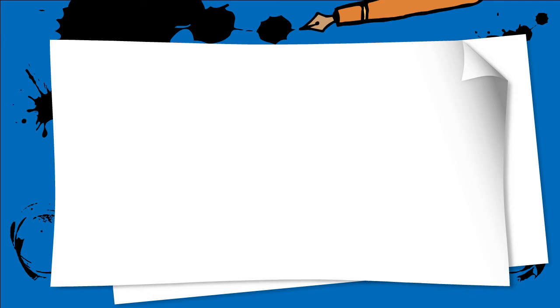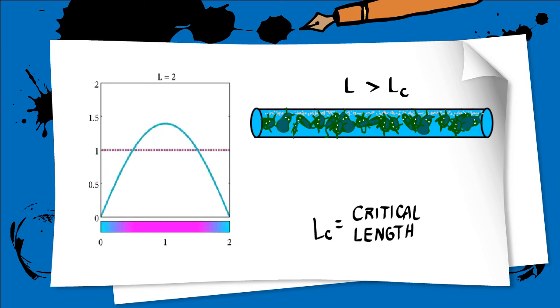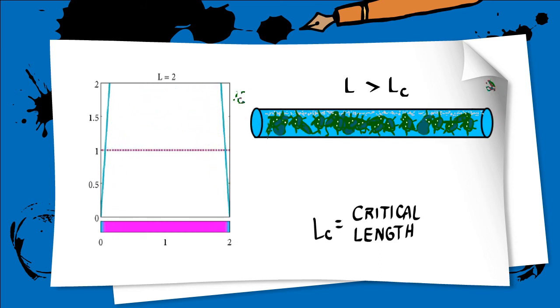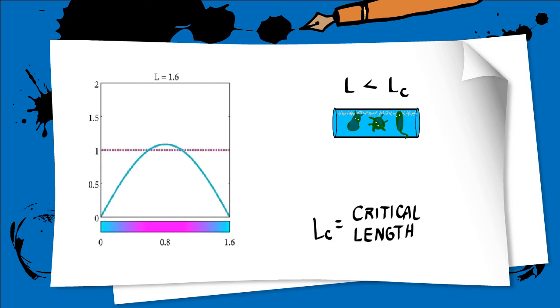Above a critical length Lc, the population of plankton will thrive and increase. If the length of the tube is less than Lc, the plankton will diffuse out of the good waters faster than they can reproduce, so the population will die out.